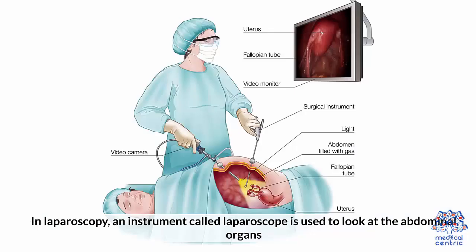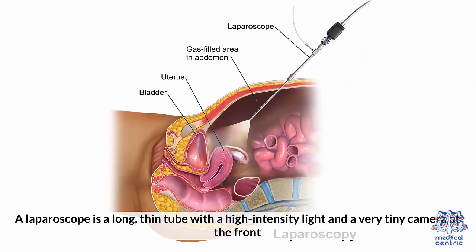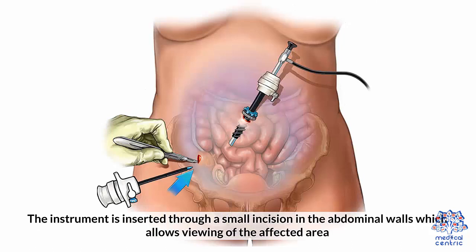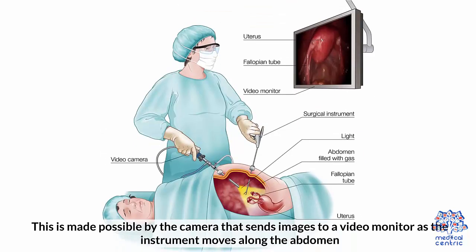In laparoscopy, an instrument called a laparoscope is used to look at the abdominal organs. A laparoscope is a long, thin tube with a high-intensity light and a very tiny camera at the front. The instrument is inserted through a small incision in the abdominal wall, which allows viewing of the affected area. This is made possible by the camera that sends images to a video monitor as the instrument moves along the abdomen.